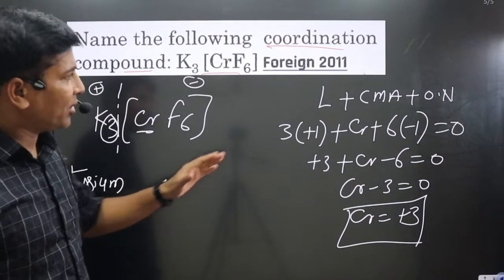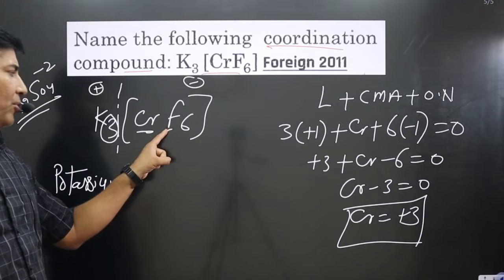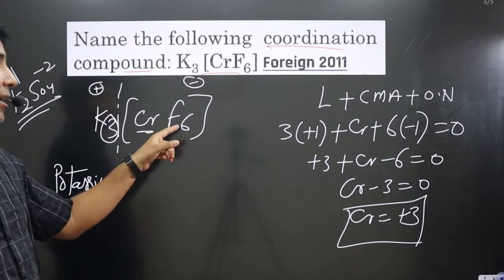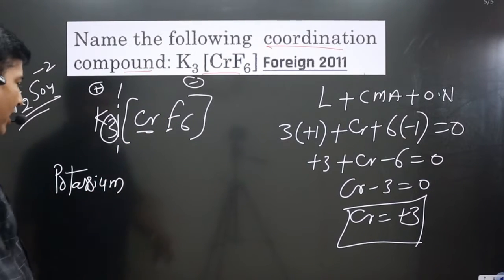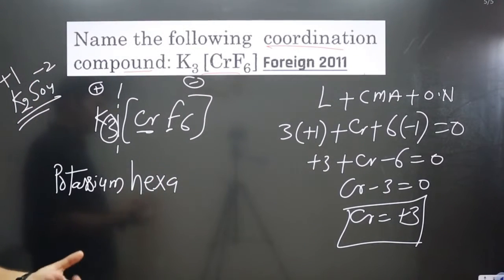Next for the complex we follow this order: ligand first. Only one type of ligand, and six are there. For six we use hexa. For fluorine we name it as fluorido.